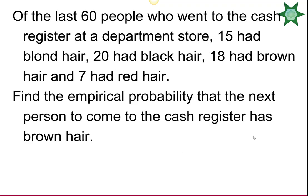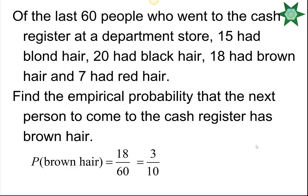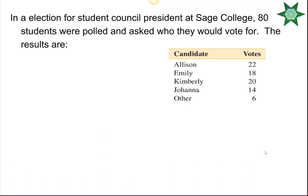Of the last 60 people who went to the cash register at a department store, 15 had blonde hair, 20 had black hair, 18 had brown hair, and 7 had red hair. The empirical probability that the next person has brown hair is 18 out of 60, which simplifies to 3 out of 10, or 0.3 as a decimal.